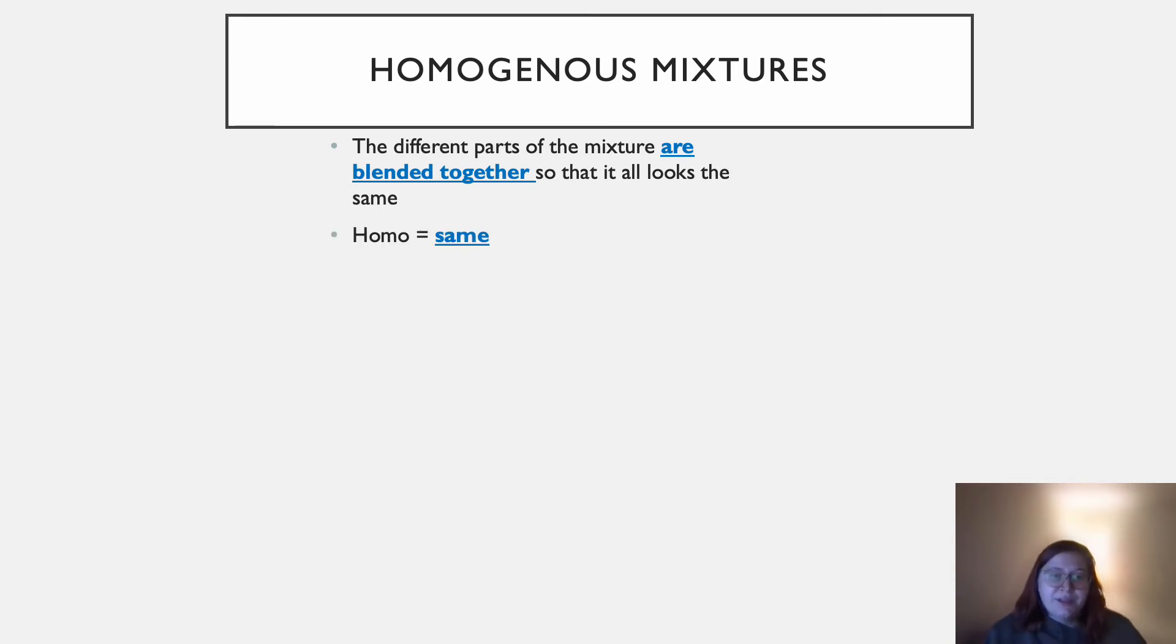And the way I remember this is that homo means same, the prefix homo. So you've probably heard this in the context of sexuality. So someone who's homosexual gets into relationships with people of the same gender as themselves. So homo means same, homogeneous mixture means it looks the same all the way through the mixture.